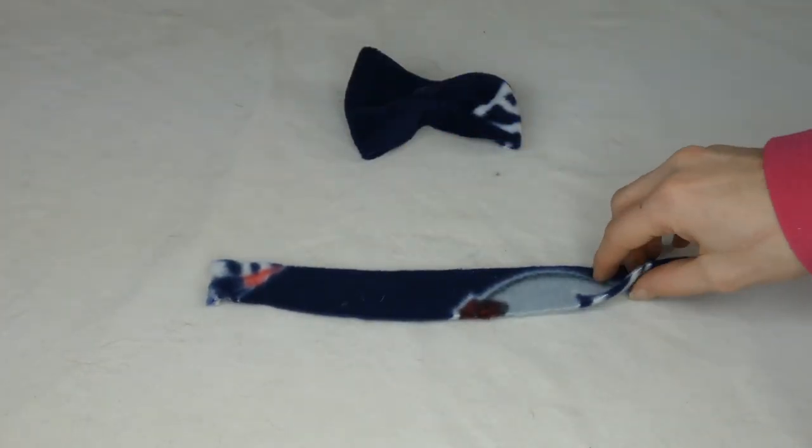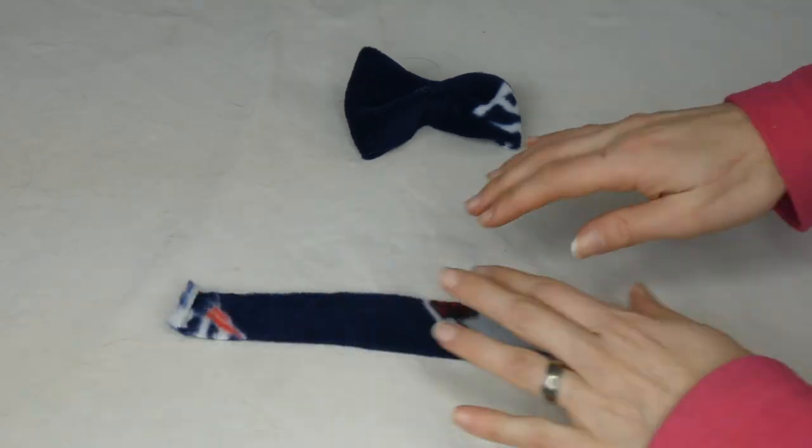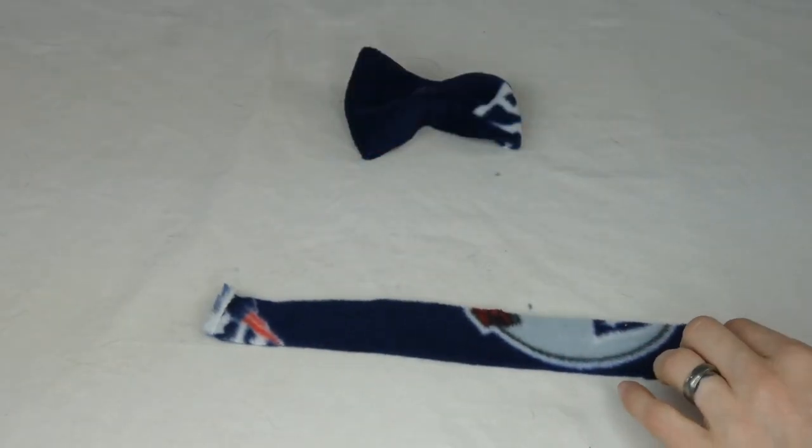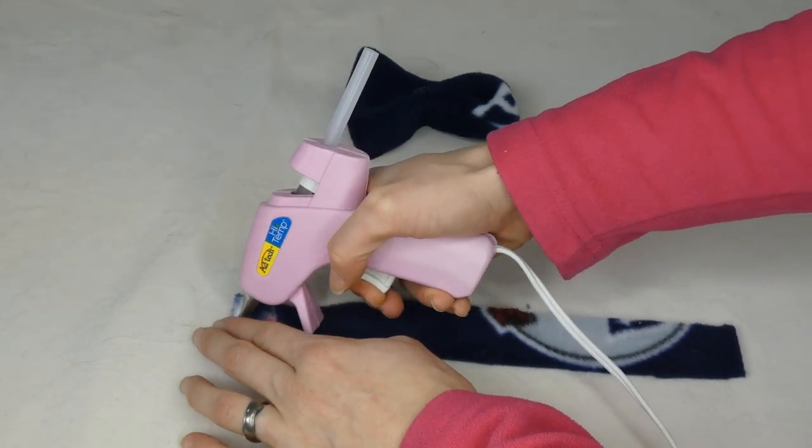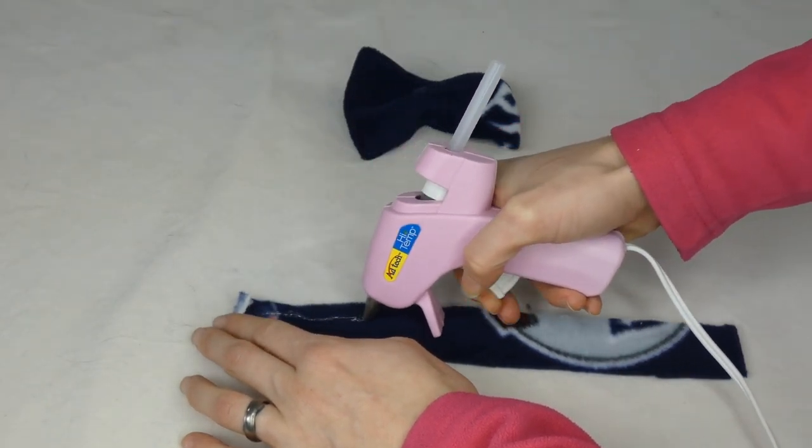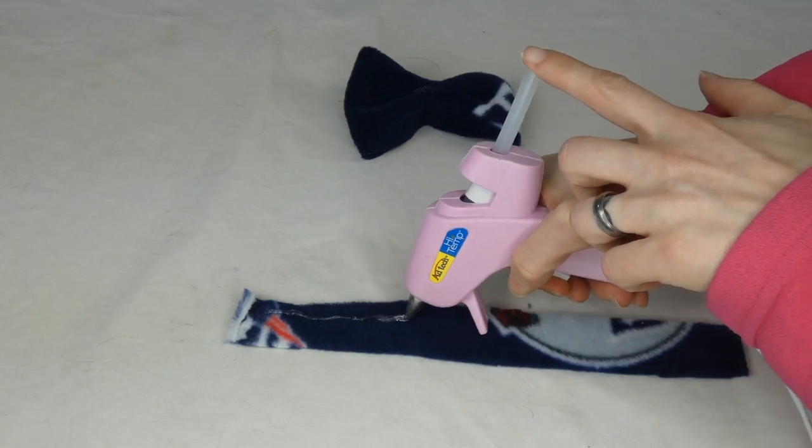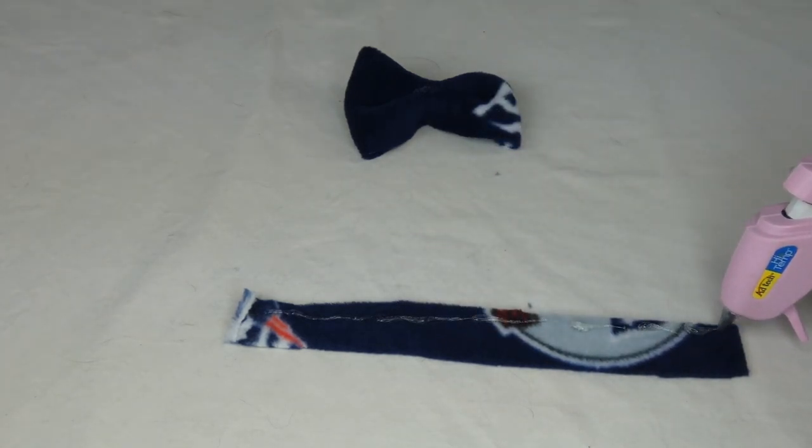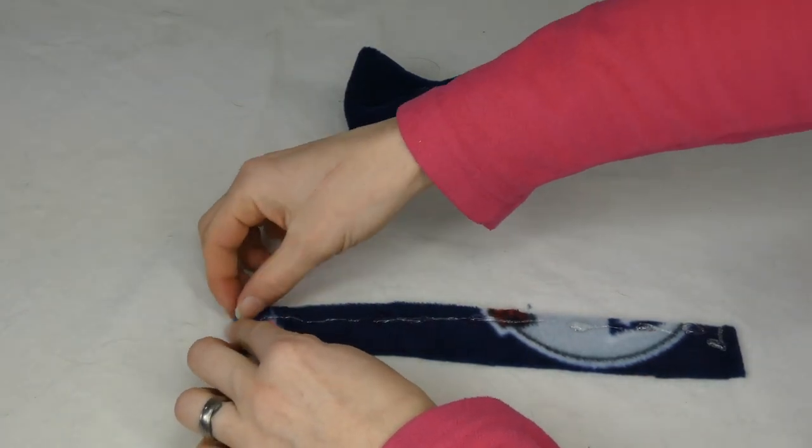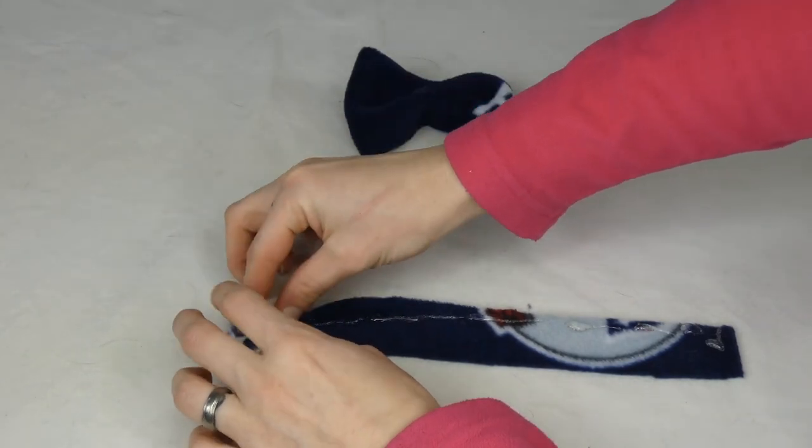And then we're going to use that other little piece of fabric that you had cut your one inch, or mine is a one inch section. And what I'm going to do here is just put a little line of glue down this side.